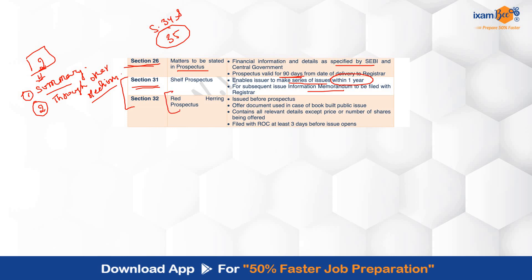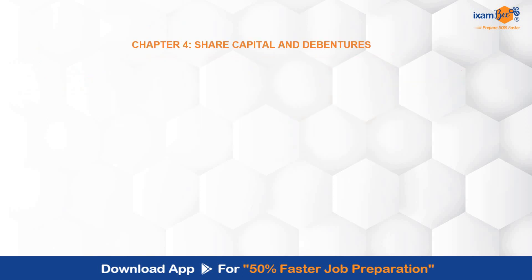Then, red herring prospectus — Section 32 lays down its provisions. Red herring prospectus makes an alert to the public at large that certain things are not yet finalized. It is issued before the final prospectus, and the book building method is used here. All the other details of the prospectus are present, but the price or number of shares being offered — either of them — will be missing. Generally, the price is missing, and a price band is provided based on which the company will decide the final price of the shares.